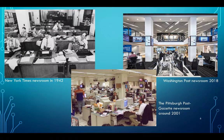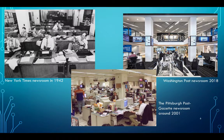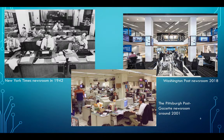Here we can see the evolution of the typical newspaper newsroom over the years. On the left, we have the New York Times in 1942, where there are no computers and the main tools used were the telephone and the typewriter. We have the Pittsburgh Post-Gazette newsroom around 2001, when computers were already in use — you can see the large CRT monitors. On the right, we see the Washington Post newsroom in 2018, which is a further development of the computer-based journalist newsroom.